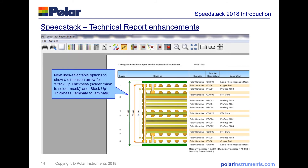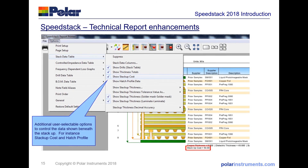There are also some customer requested enhancements to the technical report, such as new user selectable options to show a dimensional arrow for solder mask to solder mask thickness, copper to copper thickness, and laminate to laminate thickness on the stack-up technical report. Additionally, we've allowed you to show the stack-up cost or withhold the stack-up cost if it's confidential when printing the technical report to your customers.